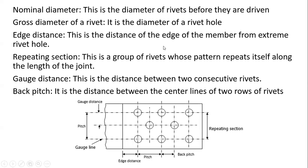The edge distance is the distance from the edge of a member to the nearest rivet — either the hole or where the rivet is sitting. The repeating section refers to a group of rivets whose pattern repeats itself along the length of the joint. The gauge distance is the distance between two consecutive rivets. The back pitch is the distance between the center lines of two rows of rivets.